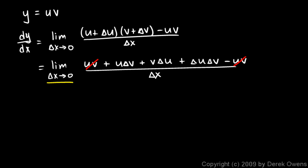And I'm going to distribute my limit across those three fractions. So I end up with the limit as delta x approaches 0, of this one right here, u delta v over delta x, plus the limit as delta x approaches 0, of v delta u over delta x. That was just the next fraction.